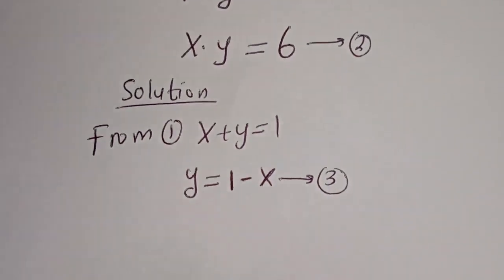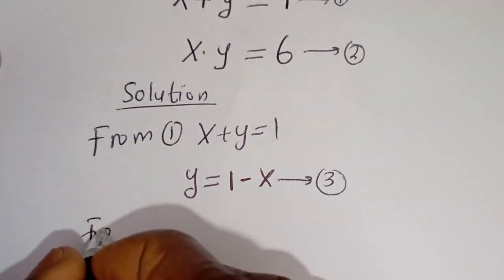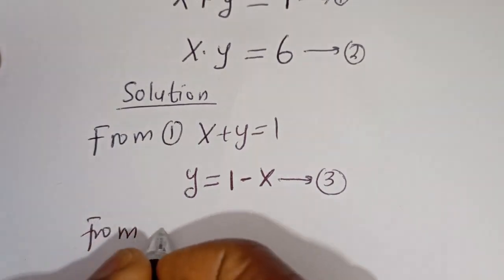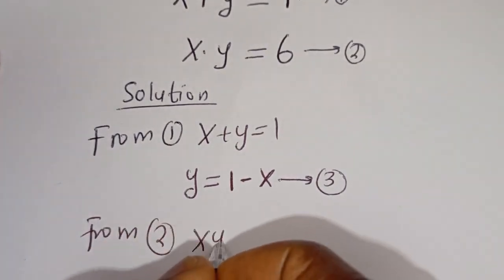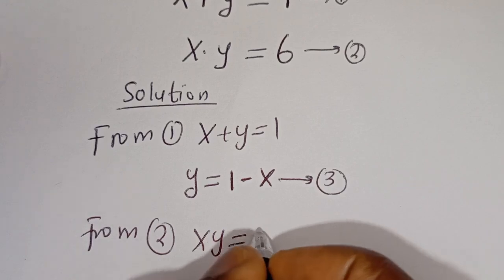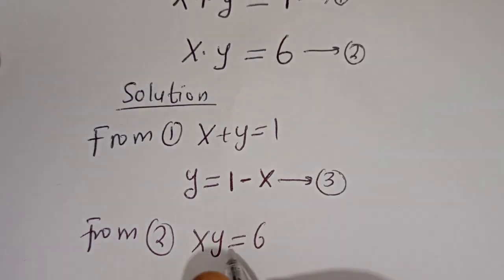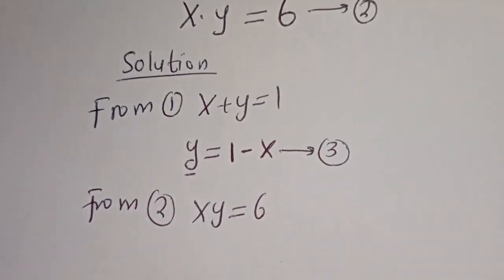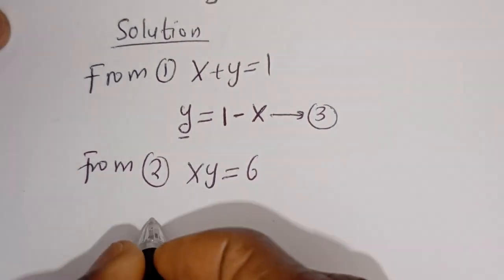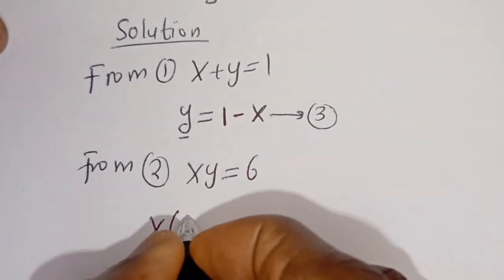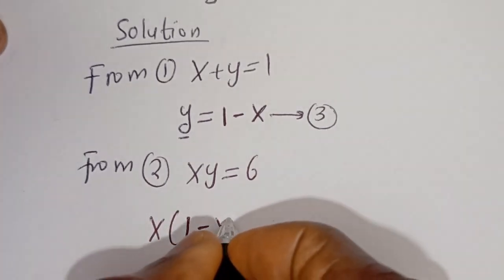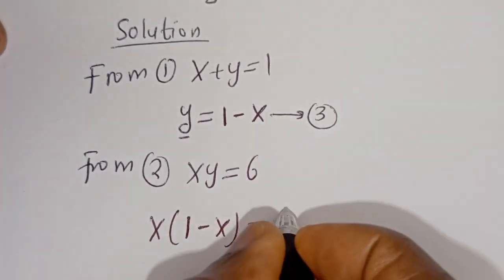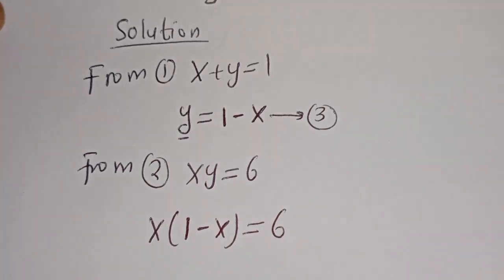Also from equation 2, x times y is equal to 6. We can now substitute for y. We have x bracket 1 minus x is equal to 6.